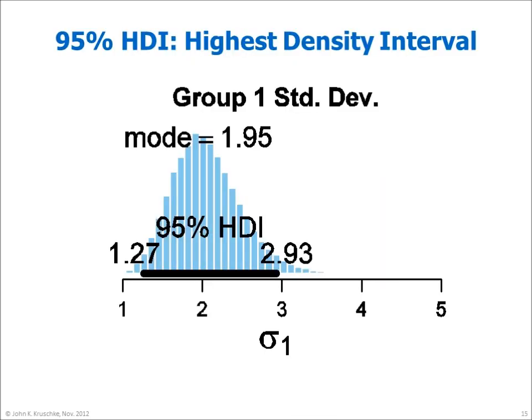Let's take a closer look at the posterior distribution for credible values of sigma1. You can see that the distribution is somewhat skewed, with the modal value being 1.95. The dark horizontal bar marks what is called the 95% highest density interval. Points within the HDI have higher credibility — that is, higher probability density — than points outside the HDI.